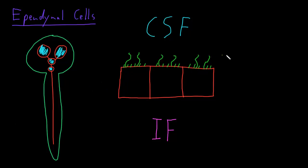One of the main functions of ependymal cells is to form a barrier between the cerebrospinal fluid and the interstitial fluid. So to some extent, they limit the movement of cells and large molecules between these fluid-filled spaces and the interstitial fluid of the tissue itself.